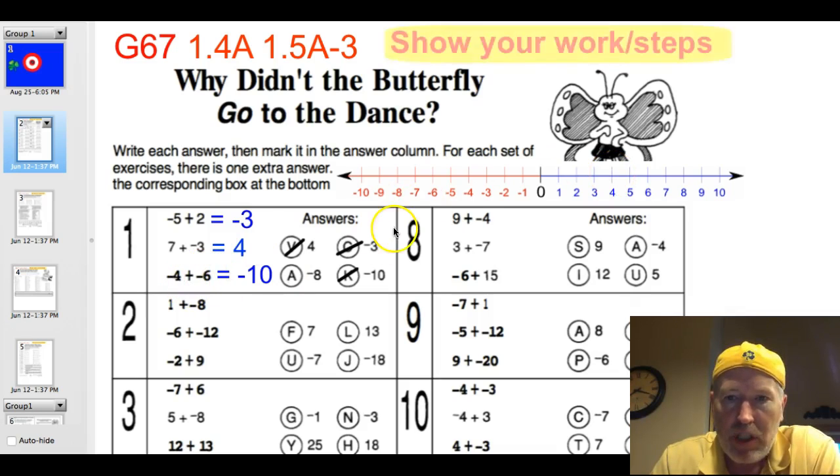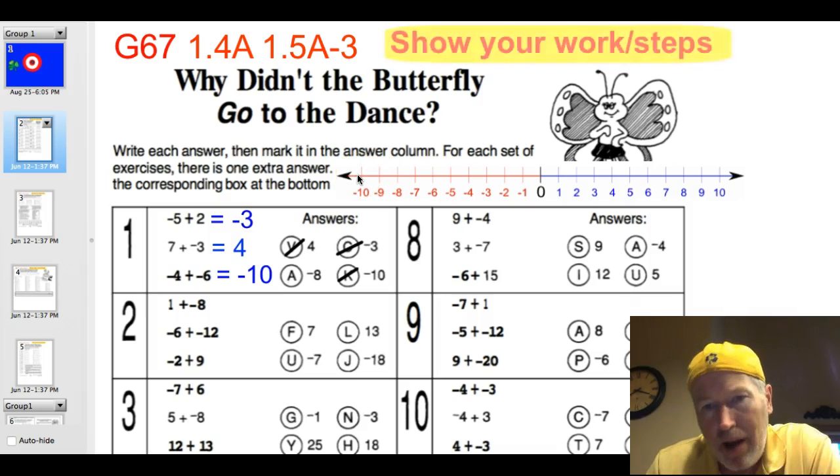All right, finally, we're at negative 4 over here. Negative 4, and we are going to add a negative 6. Again, when you add a negative, it's the same as subtracting. So what I really am looking at is negative 4 minus 6. When we subtract, we go to the left. So 1, 2, 3, 4, 5, 6, and you are at negative 10.